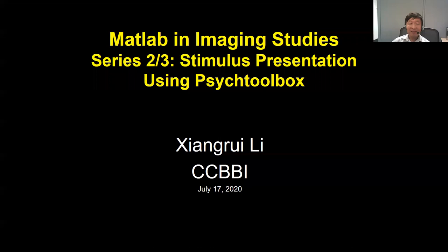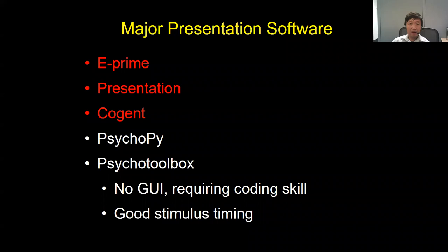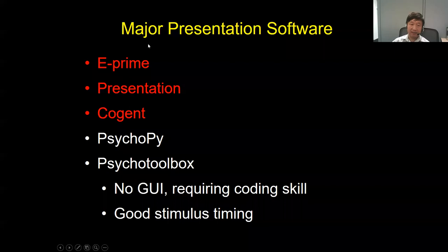Here I briefly mention a couple of software options. Psychtoolbox under MATLAB or Octave is one of them. E-prime, Presentation, and Cogent are commercial software — they're nice in terms of user interface, which is one major reason people use them, especially those without coding experience. PsychoPy under Python and Psychtoolbox are still developing user interfaces, but their interfaces are not as polished as those commercial tools.